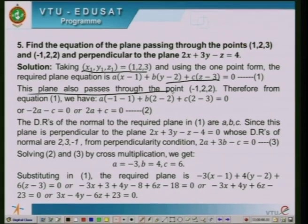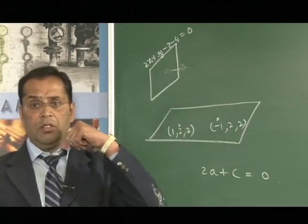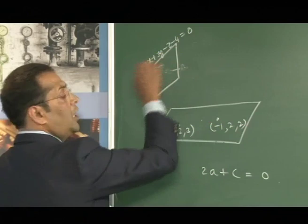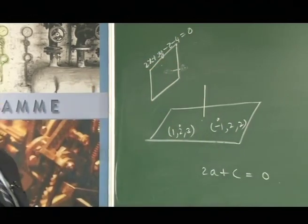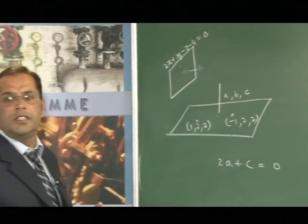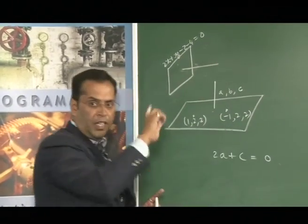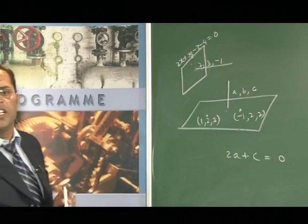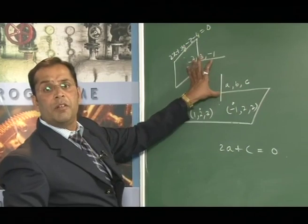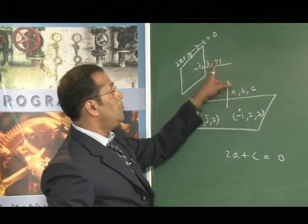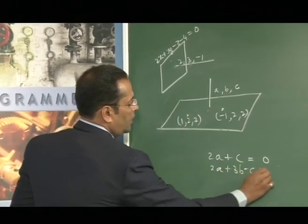The plane in equation 1 is also perpendicular to 2x plus 3y minus z equal to 4, whose normal has direction ratios 2, 3, minus 1. The direction ratios of the normal to the required plane from equation 1 are a, b, c. Applying the perpendicularity condition: 2a plus 3b minus c equal to 0. So now we have two equations: 2a plus c equal to 0 and 2a plus 3b minus c equal to 0.